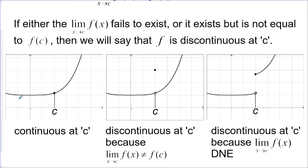Here's an example. This is continuous because the limit from both sides goes right to the actual value of the function. This one's discontinuous because the limit coming from either side goes to this open circle — that would be the limit — but the actual value of the function is way up here. Same with this one: the limit coming from one side and the other just doesn't match, so it is discontinuous. A simpler definition: if we have to lift our pencil off the page to draw this, then it's discontinuous. If we can draw it straight through without lifting our pencil, it is continuous.